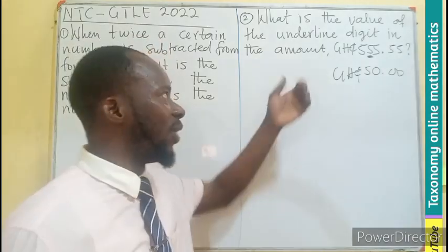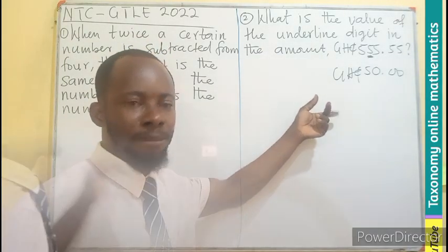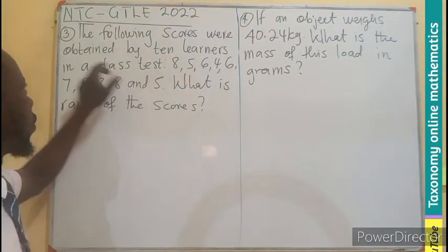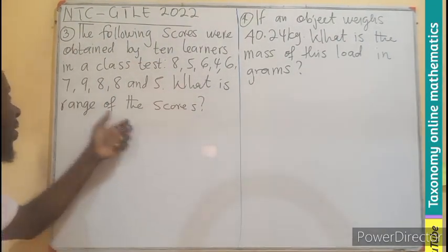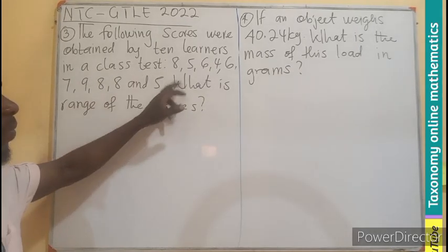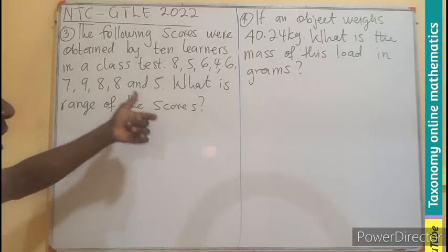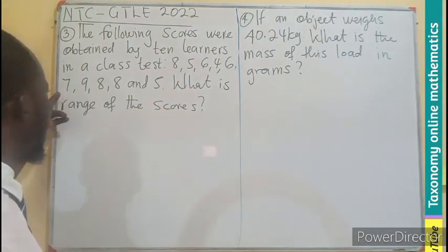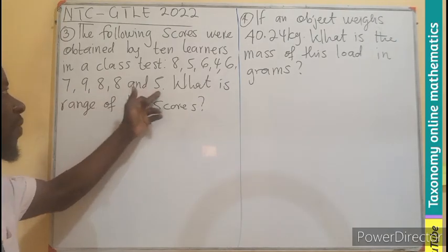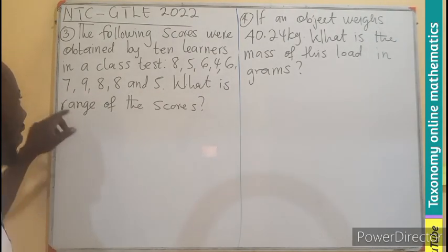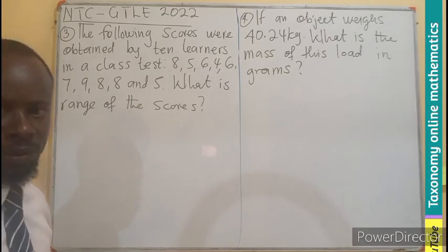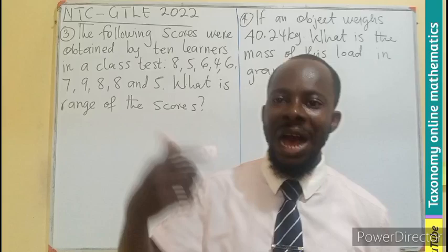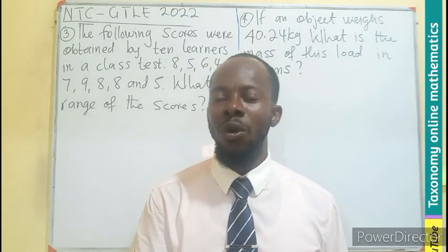Question 3: The following scores were obtained by 10 learners in a class test. The numbers or their scores are 8, 5, 6, 4, 6, 7, 9, 8, 8, and 5. What is the range of these scores? To find the range of a given score, we are looking for the highest number and the lowest number.